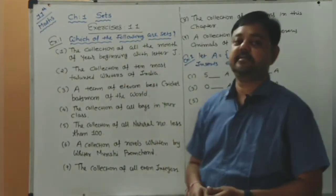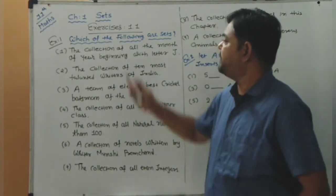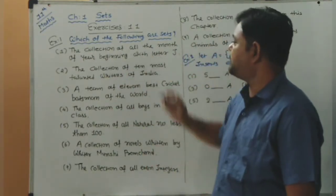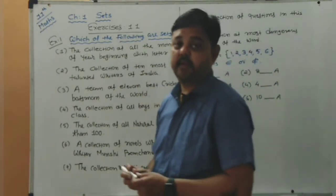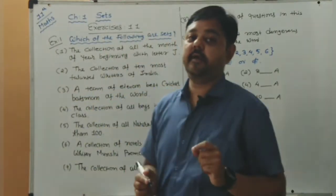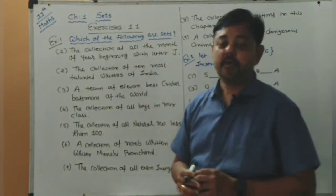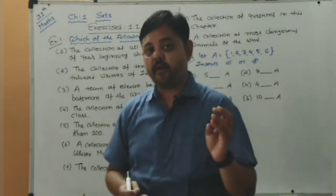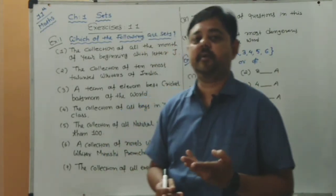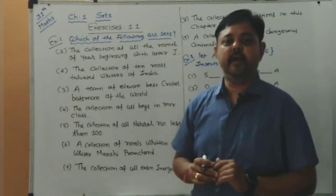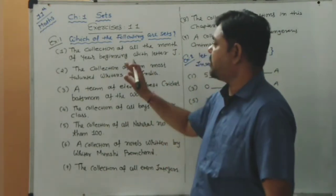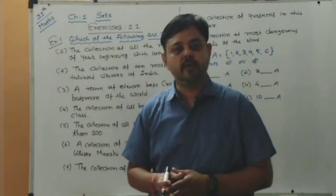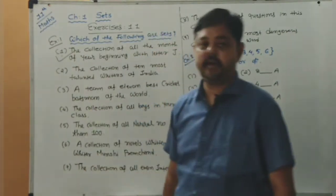Now we start Exercise 1.1, Example number one: which of the following are sets? Justify your answer. The first question is the collection of all months of the year beginning with the letter J. The months starting with J are January, June, and July — only three months. Since these are specific objects, this is a set.